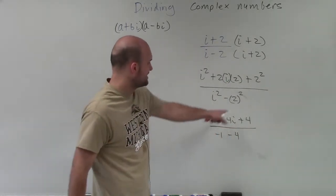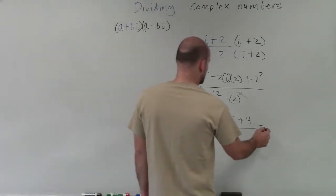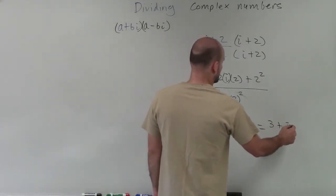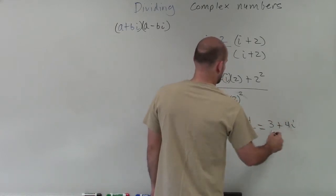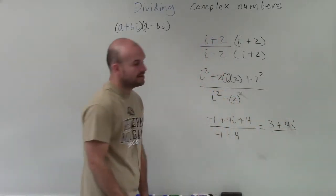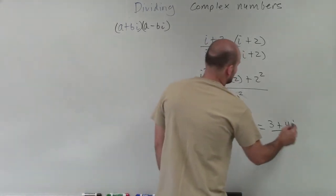Well, to simplify this, negative 1 plus 4 is going to be a positive 3 plus 4i. And then in my denominator, I have negative 1 minus 4, which will leave me with a negative 5.